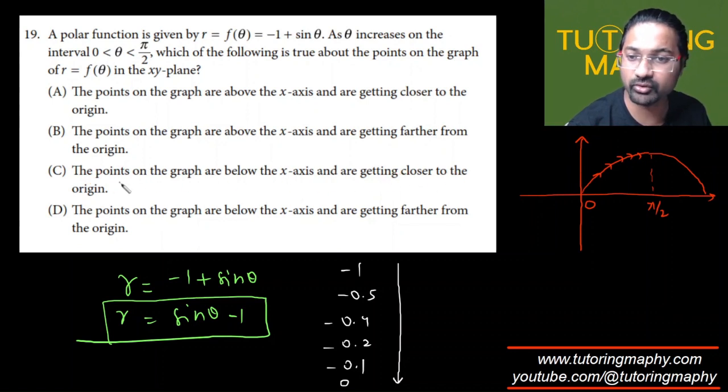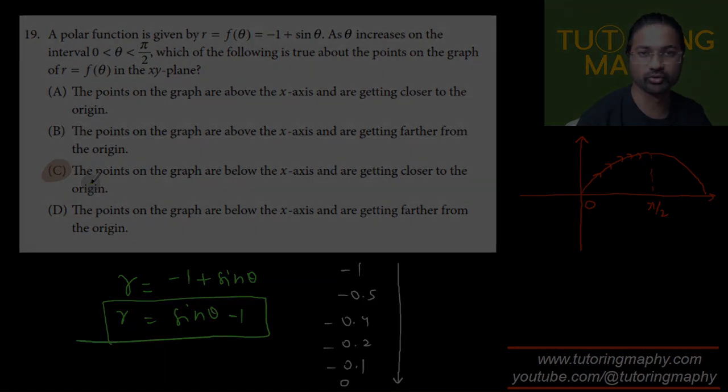Points are below the x-axis and getting closer to the origin. Points are below the x-axis and getting further from the origin. Obviously, the points are eventually getting towards the origin, closer to the origin. So the answer is option C. This was a little bit tricky, but I hope this makes sense.